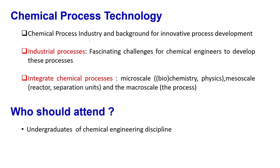Regarding the chemical process industry background: when we get some raw materials, they need to be converted to useful, economically beneficial products that we use in our day-to-day life. These are usually industrial processes, and they possess certain challenges for chemical engineers in developing these processes. To understand these challenges, you should have thorough background information regarding processes that already exist — and for that, you require this course.